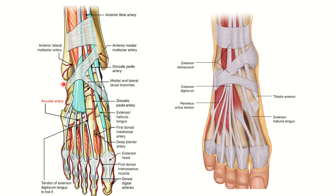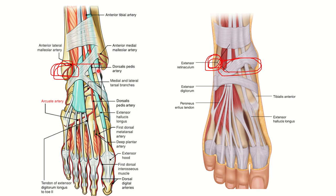In the first picture, this is the lateral malleolus, and in the second picture this is also the lateral malleolus. We can see the structures that pass anterior to the lateral malleolus. First, this structure is the tibialis anterior tendon, then we can see another tendon which is the extensor digitorum longus.